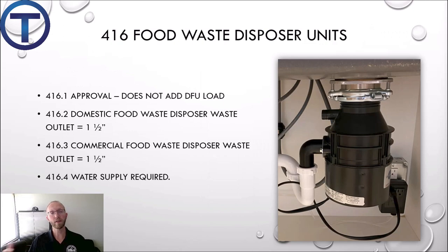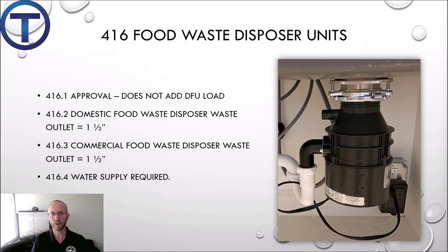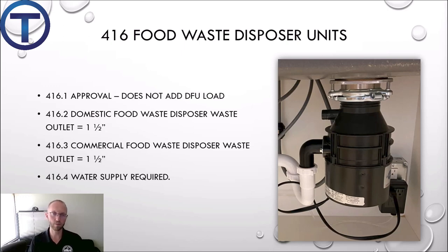In 4.16, we learn about garbage disposals — the code calls them food waste disposer units. 4.16.1 talks about the standards and approvals, but it also says that a garbage disposal does not add to the drainage fixture unit load. So when you're sizing a drain system and counting sinks and toilets to make sure you have the right size pipe, you don't have to add extra just because there's a garbage disposal — it falls under the sink drainage fixture units it's attached to.